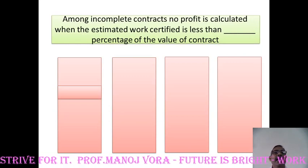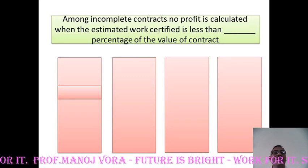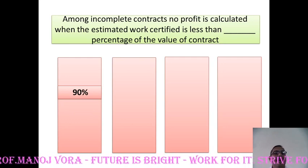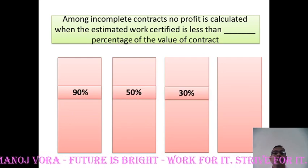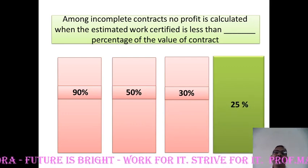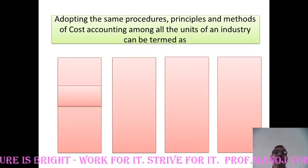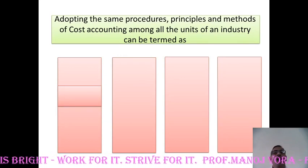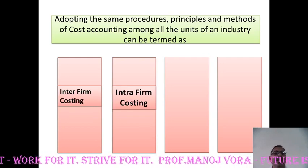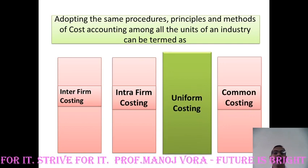Your next question: among incomplete contracts, no profit is calculated when the estimated work certified is less than dash percentage of the value of contract — 90%, 50%, 30%, or 25%? Your right answer has to be 25%. Adopting the same procedures, principles, and methods of cost accounting among all the units of a similar industry can be termed as inter-firm costing, intra-firm costing, uniform costing, or common costing. Your right answer has to be uniform costing.